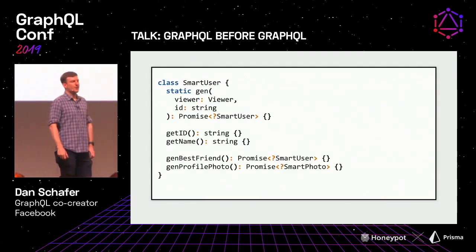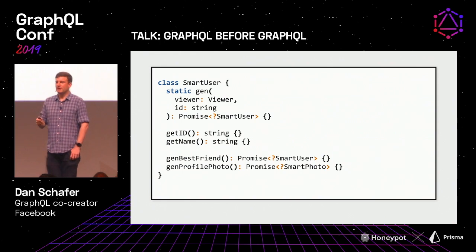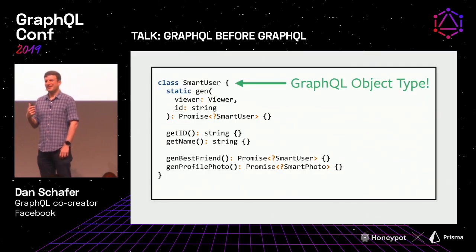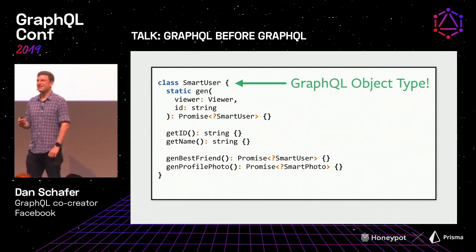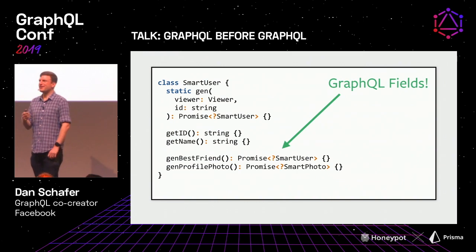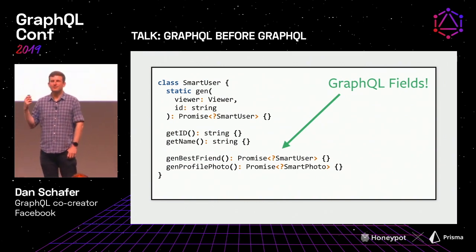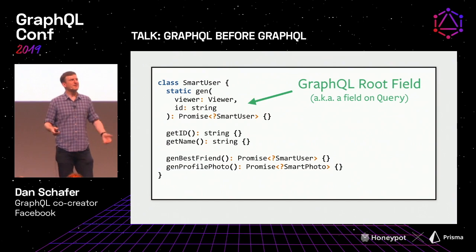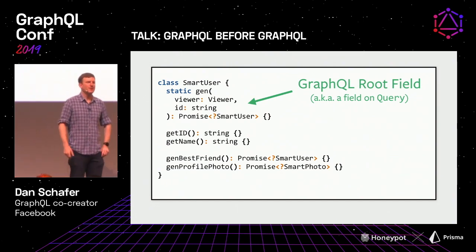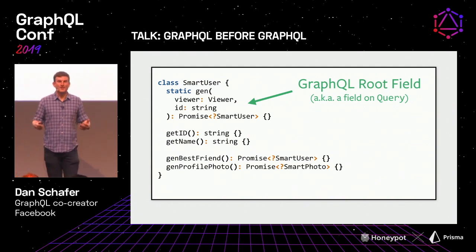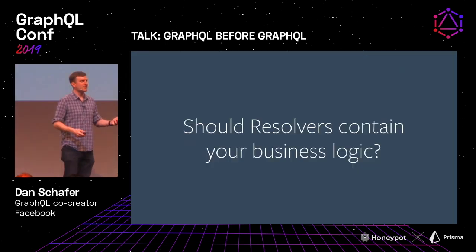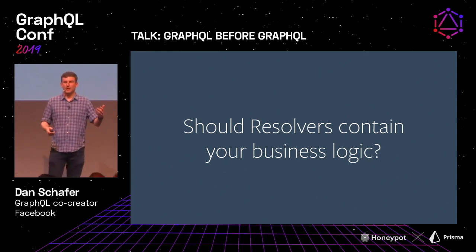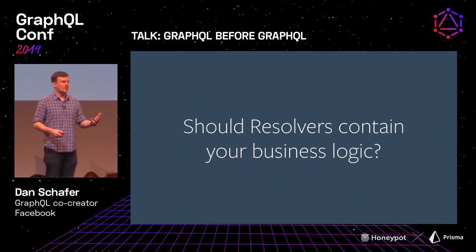This is where things start to look eerily familiar. If I look at this class and squint, it looks really familiar — it's kind of a GraphQL object type. These methods that asynchronously return another one of these types are just GraphQL fields that return objects. That gen method is a root field — you put it on Query, it gives you a user given a viewer and an ID. This isn't by coincidence: the reason GraphQL concepts correspond so nicely to this is because that's what existed at Facebook in January 2012 when we were building GraphQL. We had these smart data objects and built GraphQL as a wrapper around them.